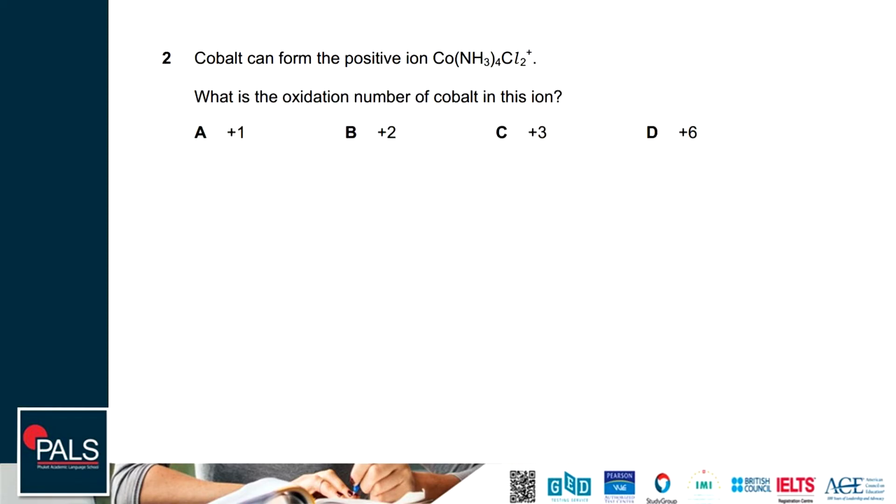Question 2: cobalt can form a positive ion. They show you the cobalt ammonium chloride ion. What is the oxidation number of cobalt in this ion? We can solve this by simple algebra. This is the work that I show you. In the end we will know that the cobalt oxidation number will be positive 3.